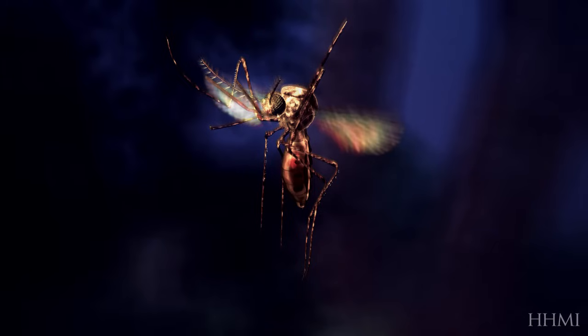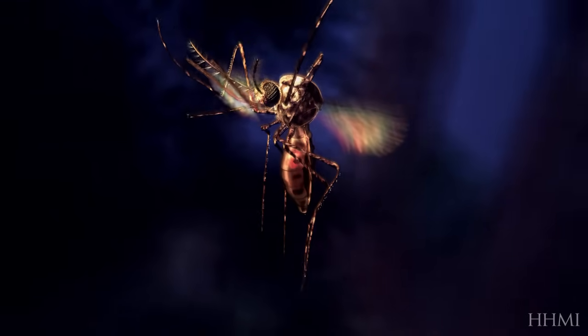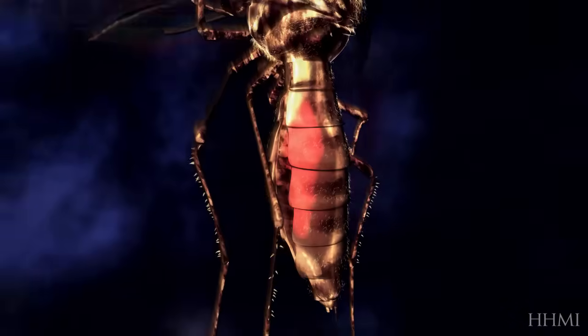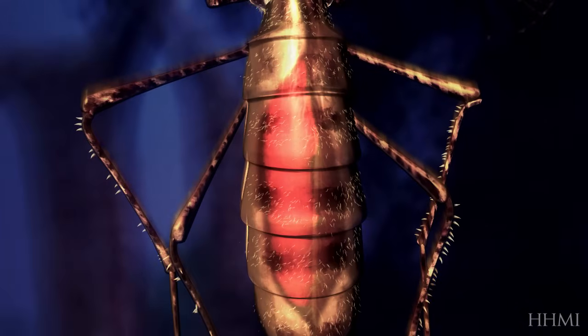Mosquitoes are usually vegetarian, preferring to drink nectar, fruit juices, and honeydew. Only a pregnant mosquito will bite humans, seeking nutrients from blood to nourish her developing eggs.